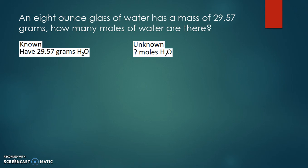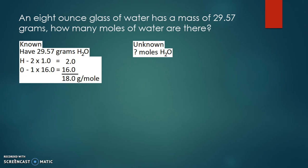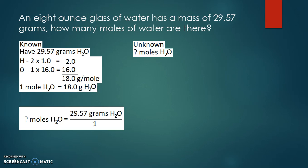We need to find the molar mass of water. Water is made up of two hydrogens, each with a mass of 1, and one oxygen with a mass of 16. Two plus 16 gives us a molar mass of 18 grams per mole.